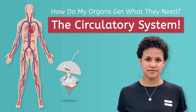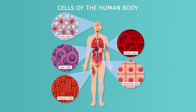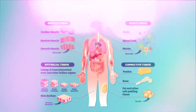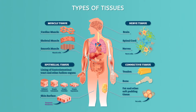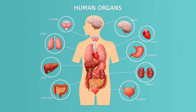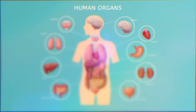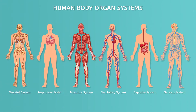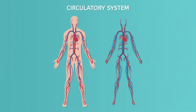In our biology journey, we've studied cells, and then we discovered that in most multicellular organisms, cells organize into tissues, which come together to form organs, which build body systems, which collectively make an organism. In this lesson, we'll explore a specific body system in humans: the circulatory system.